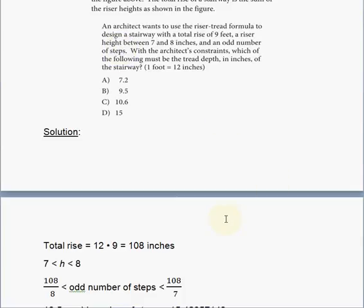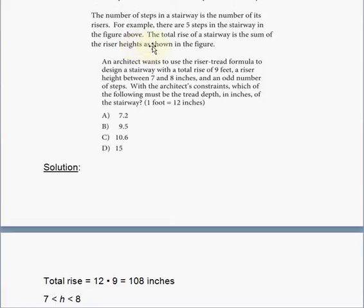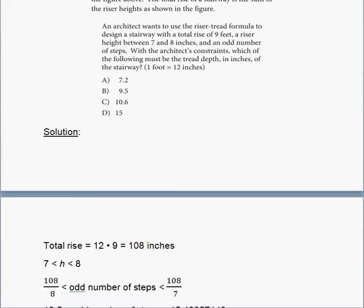If the total rise is 108 inches, the total rise of a stairway is the sum of the riser heights. This is an important piece of information. If h is a certain value, then there is a number of those h's that will give you the total rise, which is 108 inches. So the odd number of steps and the number of these heights will be determined by using this constraint. 108 inches divided by the height will give you the number of these heights. If you divide by the higher boundary for the value of h, it will give you the lowest number of riser heights, the lowest number of odd number of steps. And we're not including this point—it's not less than or equal to, it's just less than.